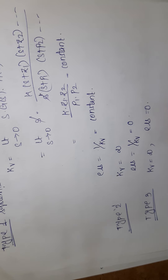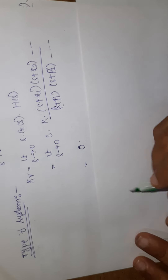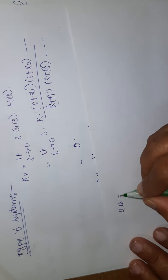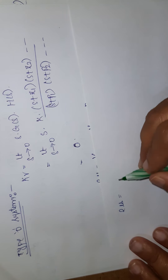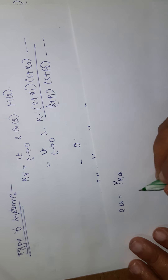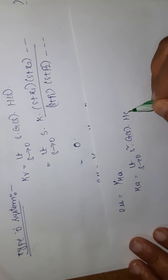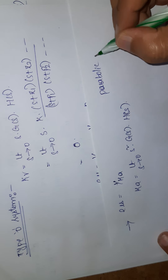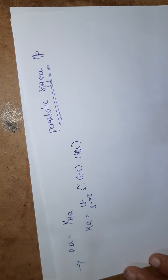The same analysis applies for the parabolic signal input. E_ss = 1/K_a, where K_a = limit s→0 of s²·G(s)H(s) is the acceleration error constant. In the case of a parabolic signal input, we can similarly determine E_ss for different system types.